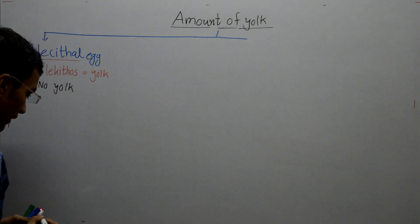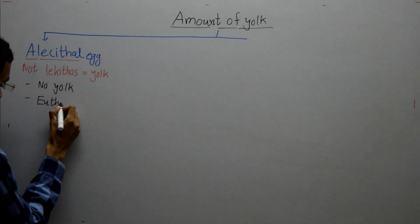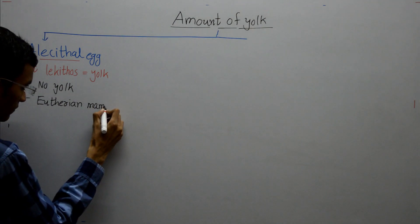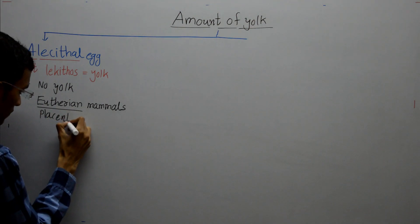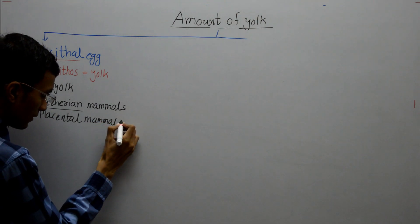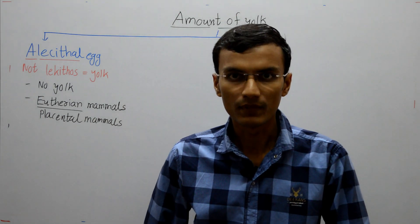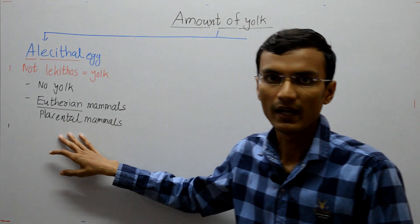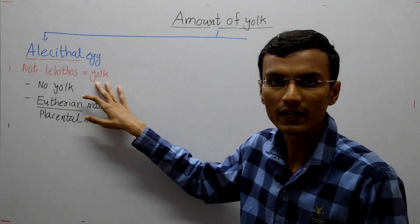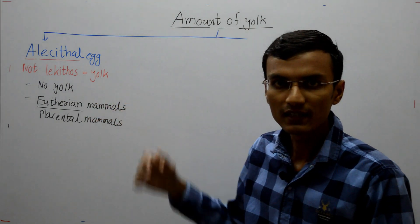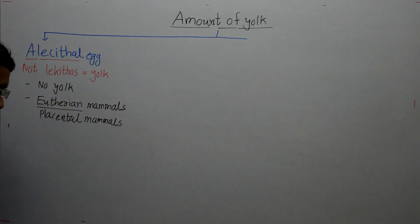Alecithal eggs are found in eutherian mammals, which are placental mammals. Since these animals have a placenta, all the nourishment to the fetus is provided by the mother through the placenta. Because the placenta supplies nourishment, there is no need for any yolk, so eutherian mammals have alecithal eggs.